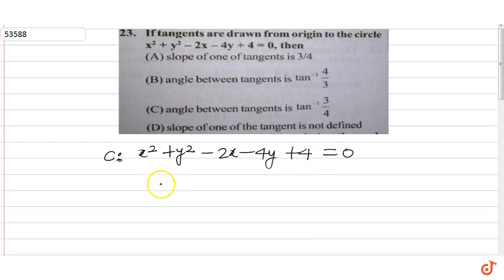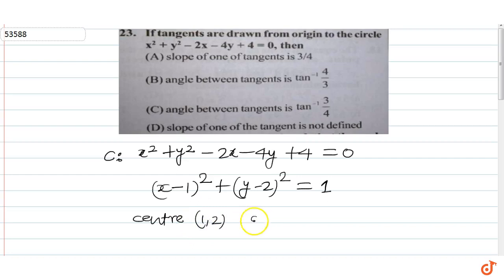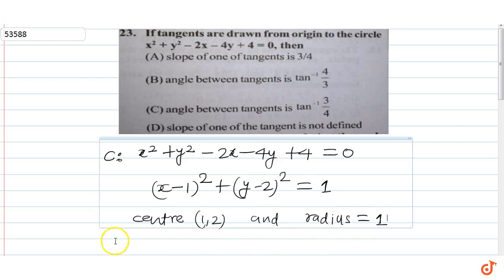तो अगर इस equation को रियरेंज करके लिखे तो यह हो जाएगा (x-1)² + (y-2)² = 1. तो यह circle के standard equation form में convert कर लिया है जिससे पता चल रहा है कि circle की center (1,2) and radius is 1 unit.